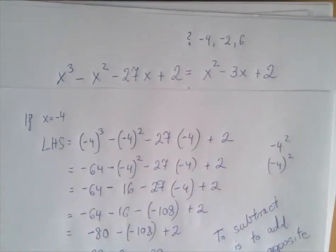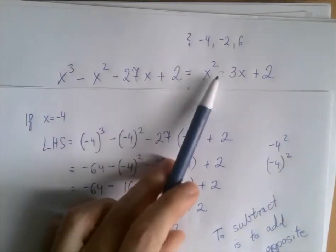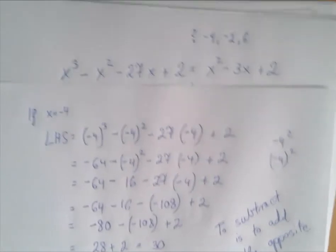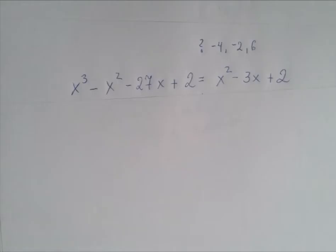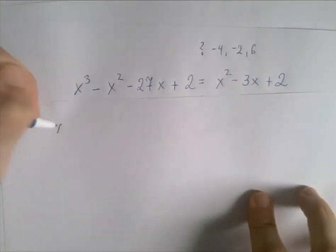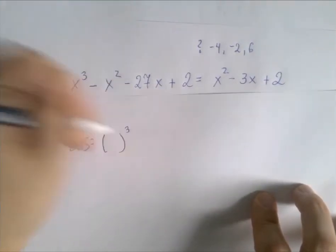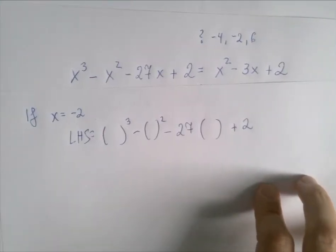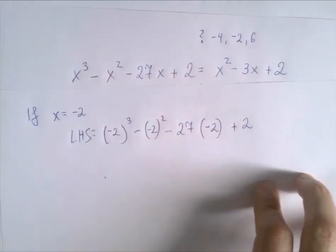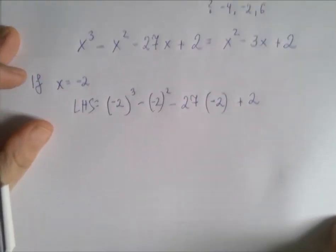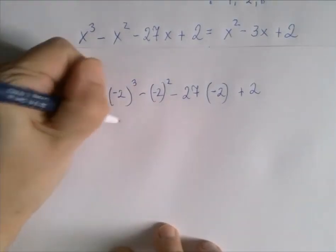So now we have to repeat the whole thing with x equals negative 2. We're going to compute the left-hand side, compute the right-hand side, and compare. If x is negative 2, first we copy the expression and replace the variable with cute little pairs of parentheses, then copy the value of the variable in there. We have two exponentiations; we go left to right. Negative 2 to the third power is negative 8.